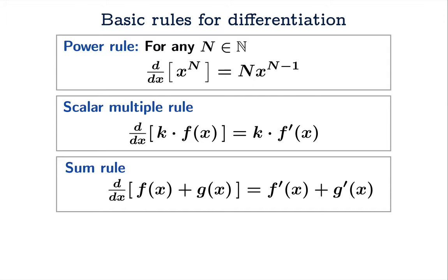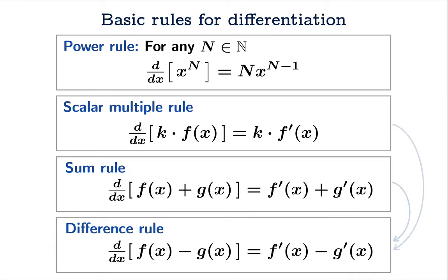Now there's a difference rule which you could write as a separate rule, but in fact it comes from the scalar multiple rule and the sum rule because you could take f of x minus g of x and rewrite it as f of x plus negative 1 times g of x and apply the two previous rules. But we'll write it out as a separate rule here, and given these ingredients we're going to be able to take the derivative of any polynomial quite quickly.